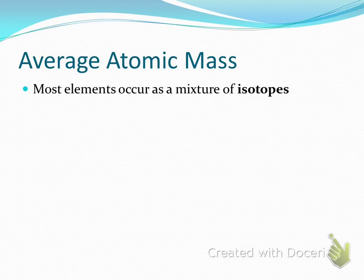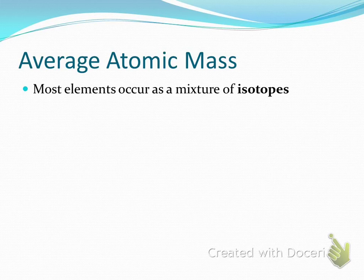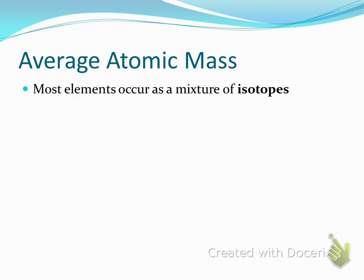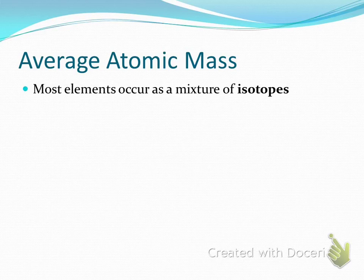Can somebody raise their hand and tell me what an isotope is? An atom that can have a varying number of neutrons, right? It can have several different atomic masses and still be considered a stable isotope. So in your lab simulation, when you added neutrons, sometimes the element remained stable and sometimes it did not. If it remained stable, that means that's one of that element's particular isotopes. There are stable isotopes and non-stable isotopes. Stable isotopes contribute to the average atomic mass, which is what you find on the periodic table.